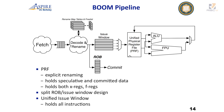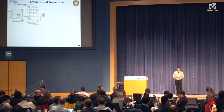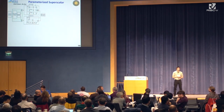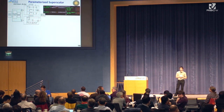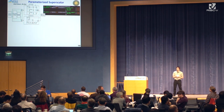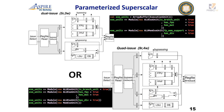BOOM is parameterized. Here's an example of a two-wide design with an FPU, ALU, and integer multiplier on one side, and divide, load-store unit, and ALU on the other. In Chisel, this is represented as an array buffer of execution units. If we want a four-wide design, we just add two more lines of code and get a four-wide processor. Chisel auto-generates the bypass network, register read ports, write-back ports, and issue select logic. All of that comes from just adding two lines of code.